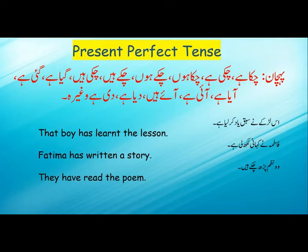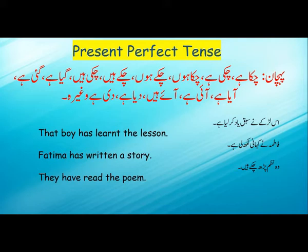Sentence number two is 'Fatima ne kahaani likh li hai'. 'Li hai' — it means it is already done. This is a task which she has started previously but finished right now. The present perfect tense is used for the condition when an action occurs in the past but gives a result in the present. So: Fatima has written a story. They have already done it but just finished it right now. That's why we have used the present perfect tense for that.